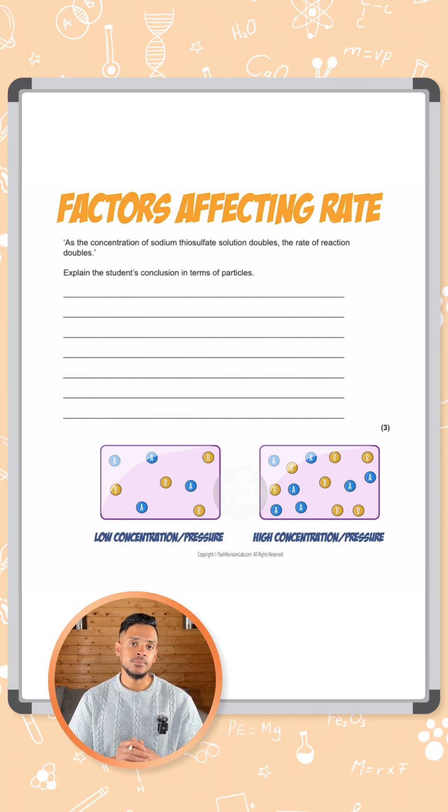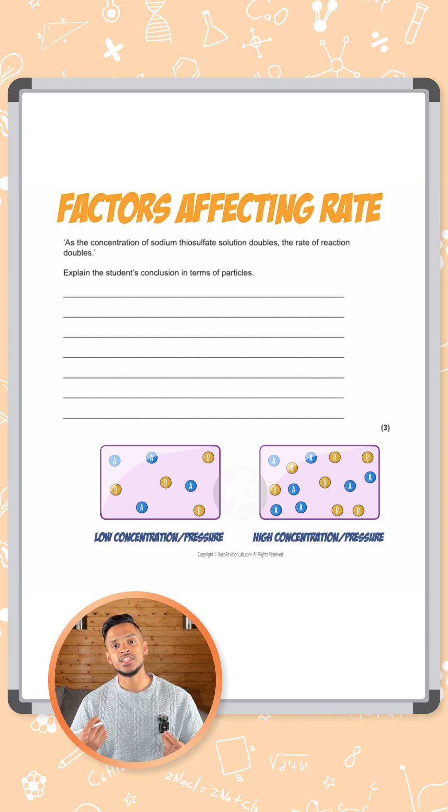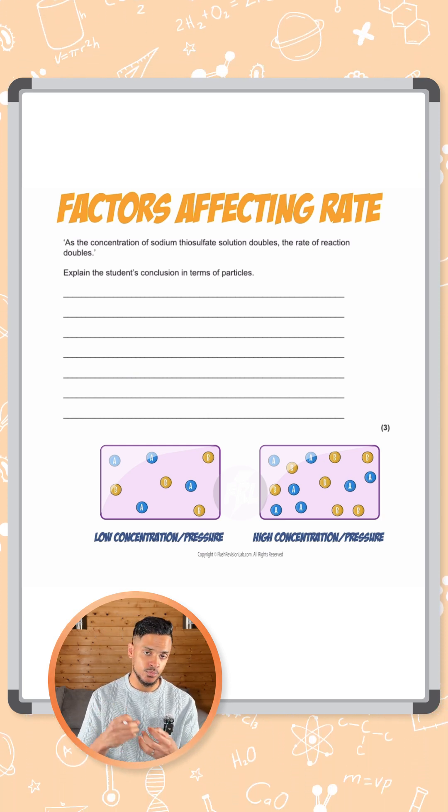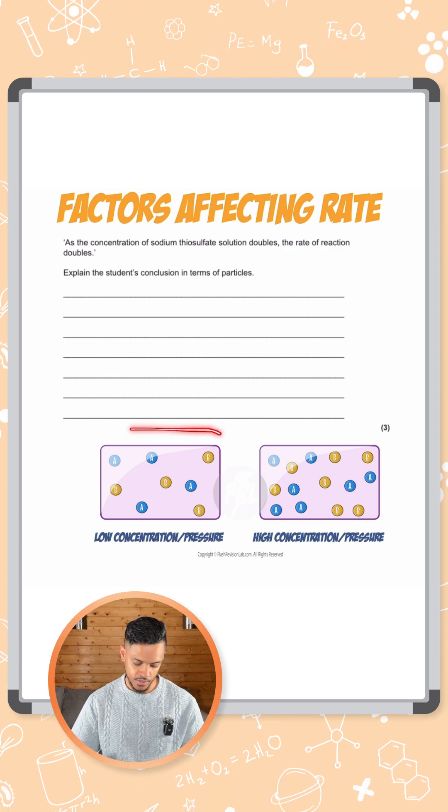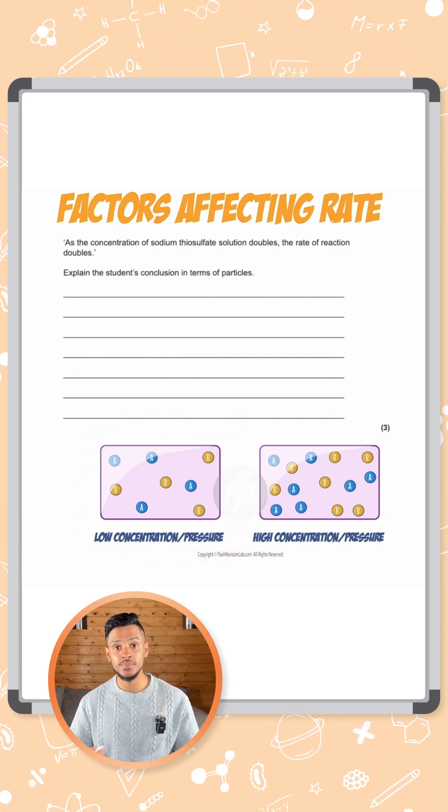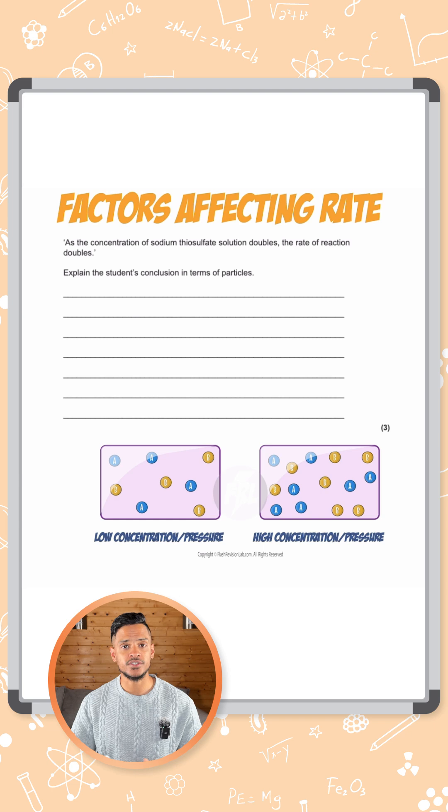Because there are more of them, it means the frequency of these collisions is greater. So they're colliding much more often. So every 10 seconds there'll be much more collisions occurring compared to the one on the left, which means there is going to be a faster rate of reaction.